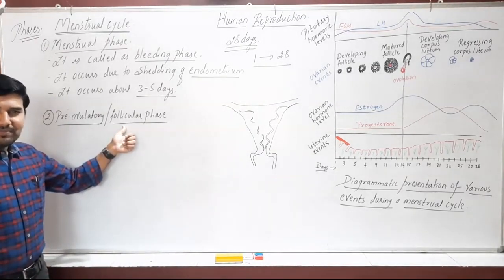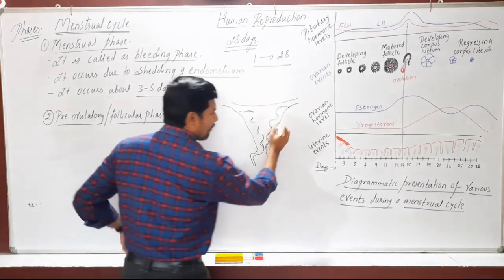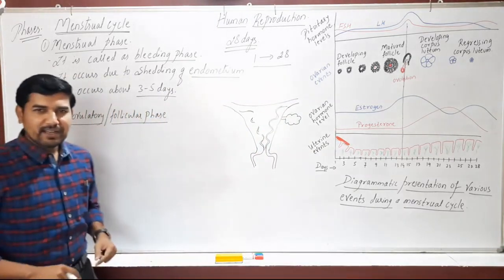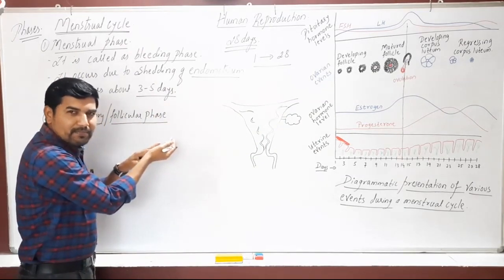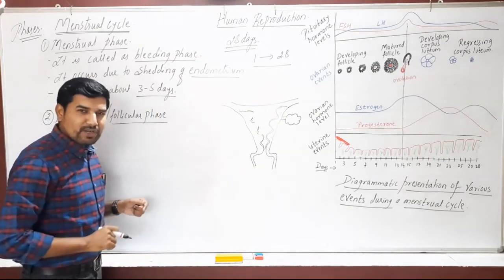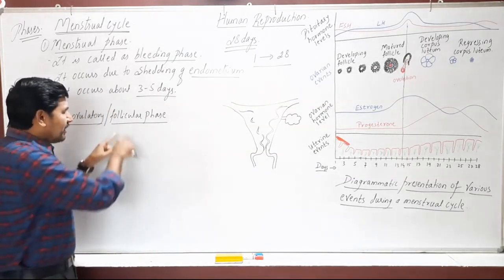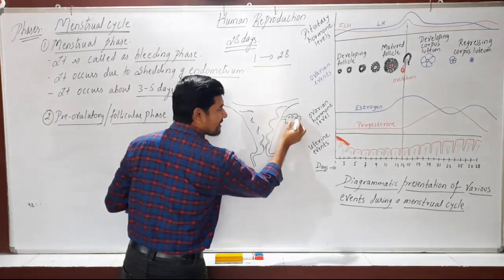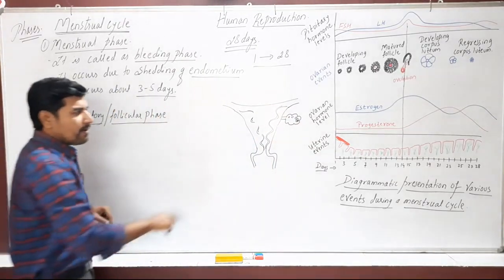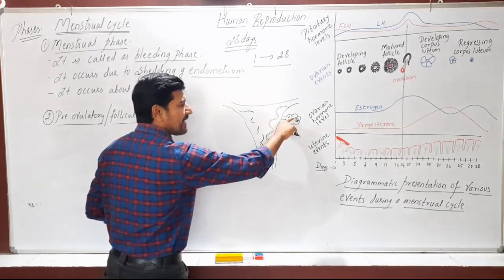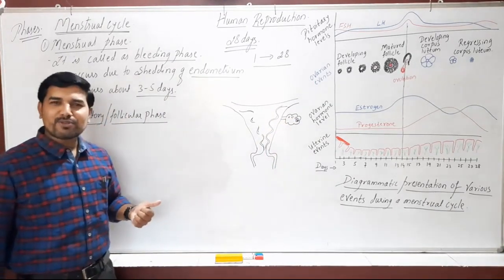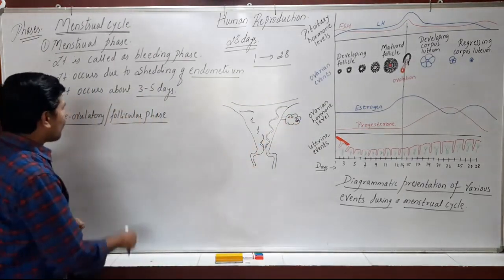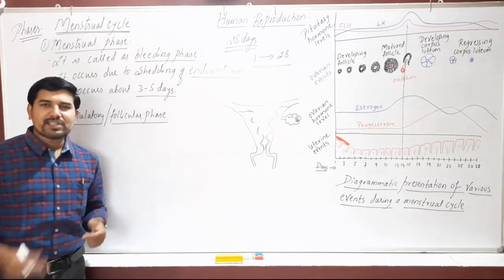During the follicular phase, the follicle inside the ovary should get developed. The follicle gets matured into the Graafian follicle, inside which the ovum is present. Follicles grow through stages — primary follicle, secondary, tertiary, and finally the matured Graafian follicle. That is why this phase is called the follicular phase.